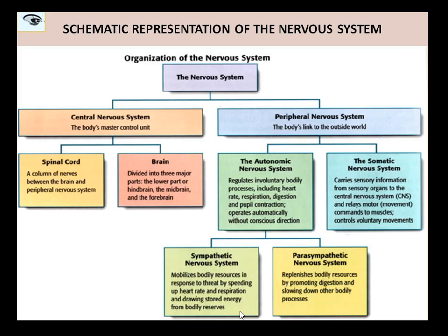If you see the somatic nervous system, that's one part. But the autonomic nervous system can be actually further divided into the sympathetic and the parasympathetic division.